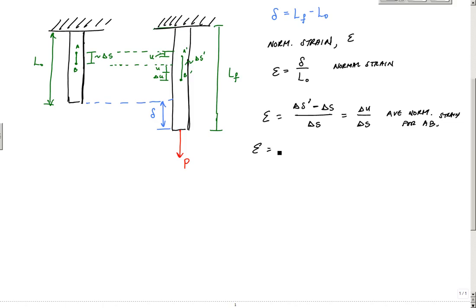So as you can imagine, there's some limit as delta S goes to zero of delta U over delta S, which becomes a derivative, dU over dS. And that says that this is my normal strain at a point, at point of body.